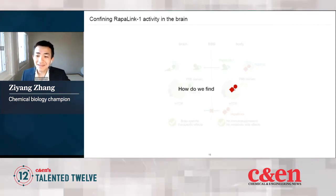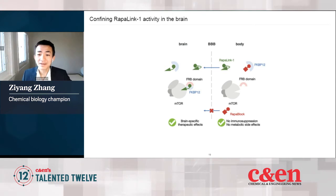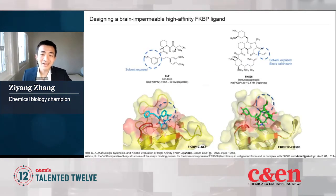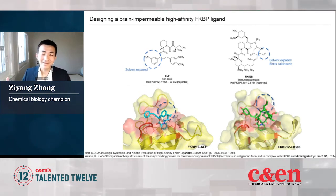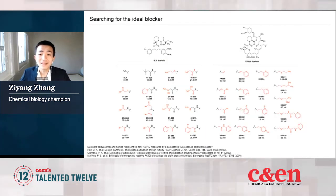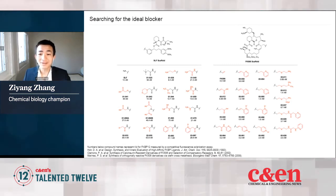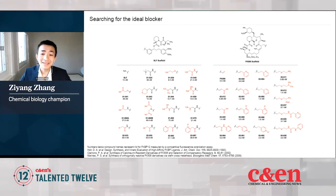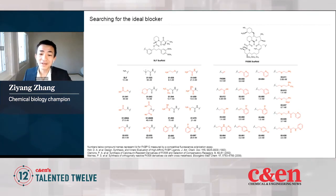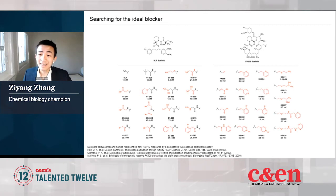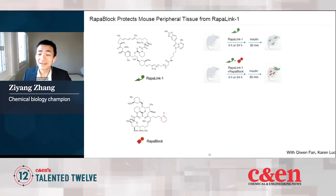We decided to look at this problem through a chemical lens. We wanted to find a molecule that doesn't get into the brain. We took on this challenge by chemically modifying two existing ligands of FKBP12, learning from decades of drug discovery in central nervous system diseases. Normally people want a drug that gets into the brain — here we did the exact opposite, adding polar functional groups to these molecules so that they don't enter the brain.